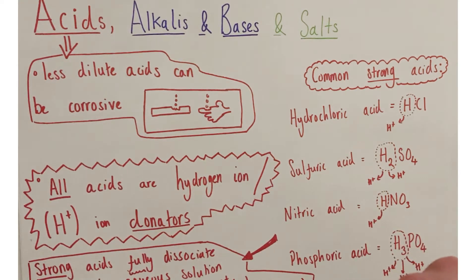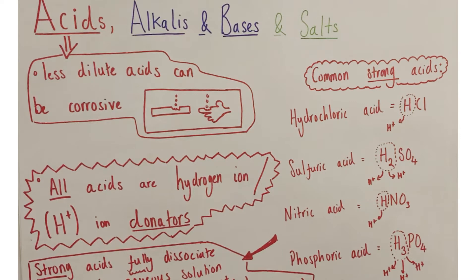So what do acids actually do? All acids contain hydrogen ions somewhere in their structure and all acids are hydrogen ion donators in aqueous solution. That means when dissolved in water they release their H+ or hydrogen ions into solution, and it's these hydrogen ions and their protonation of other materials which accounts for the acidic behavior of all acids.